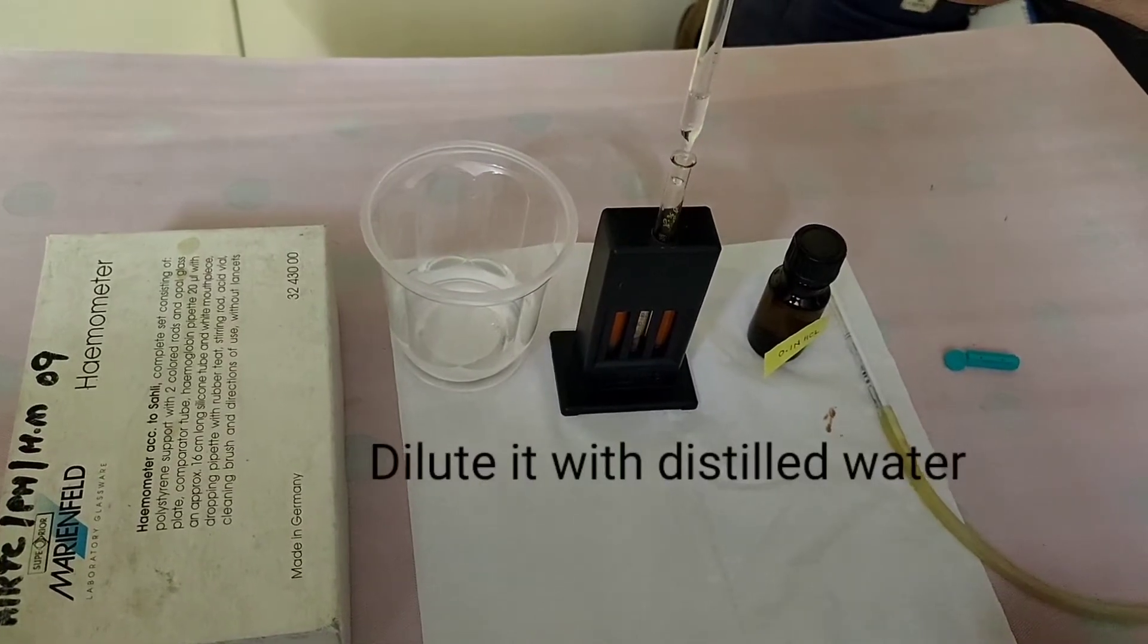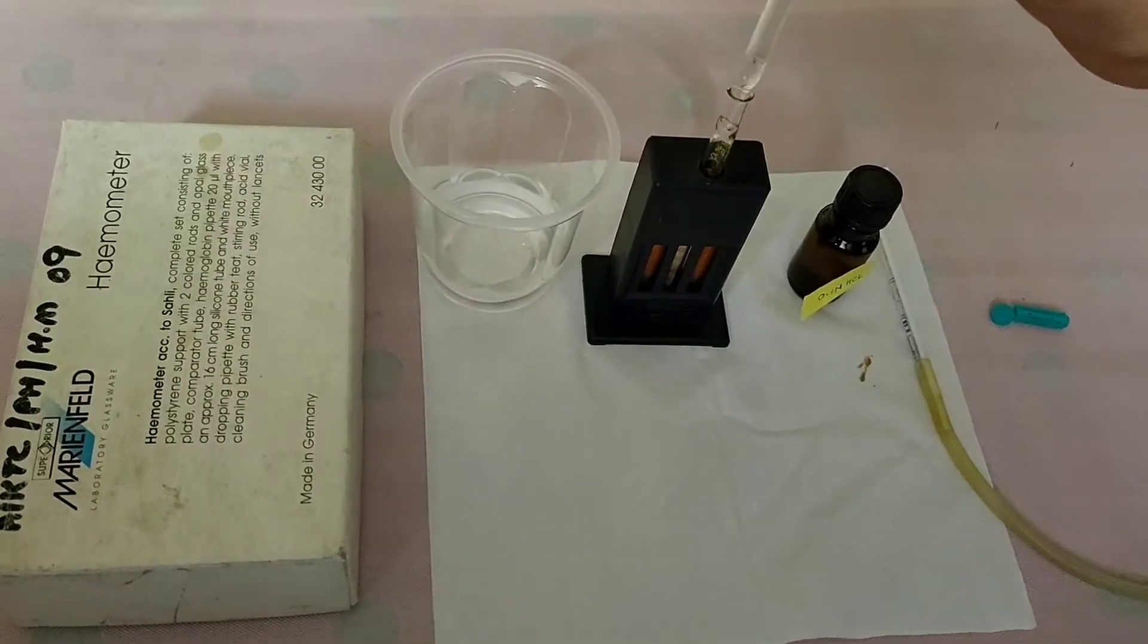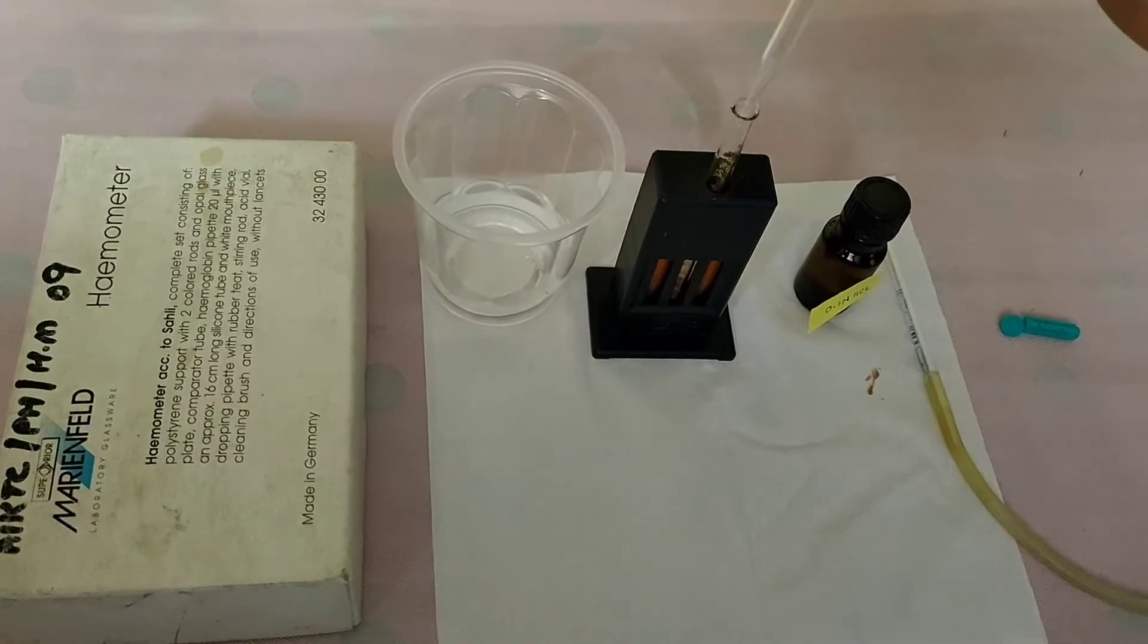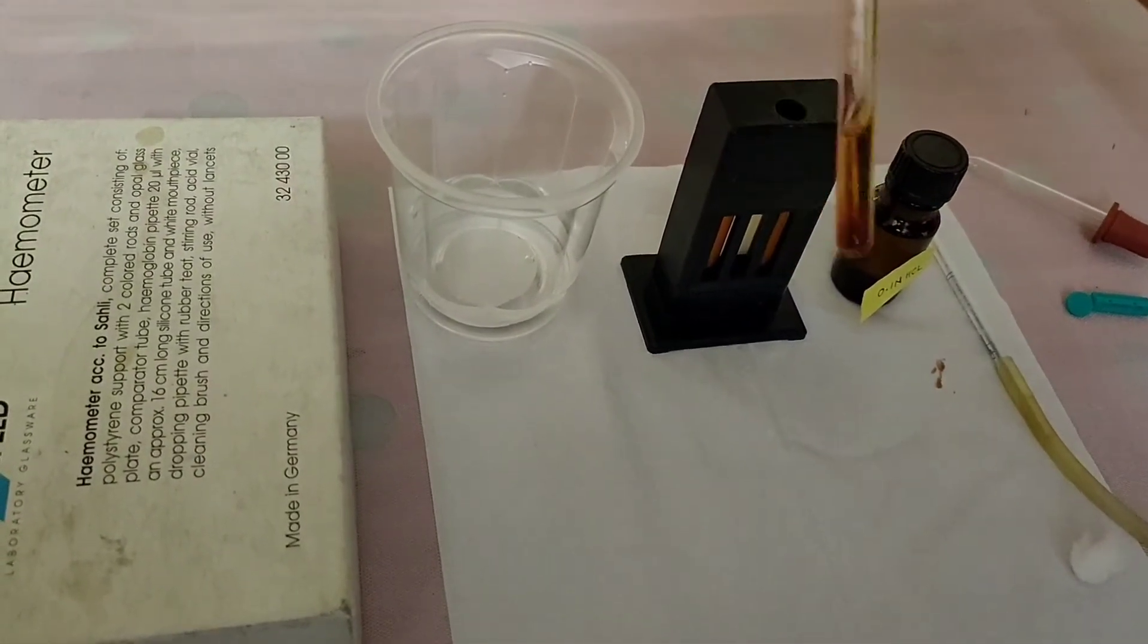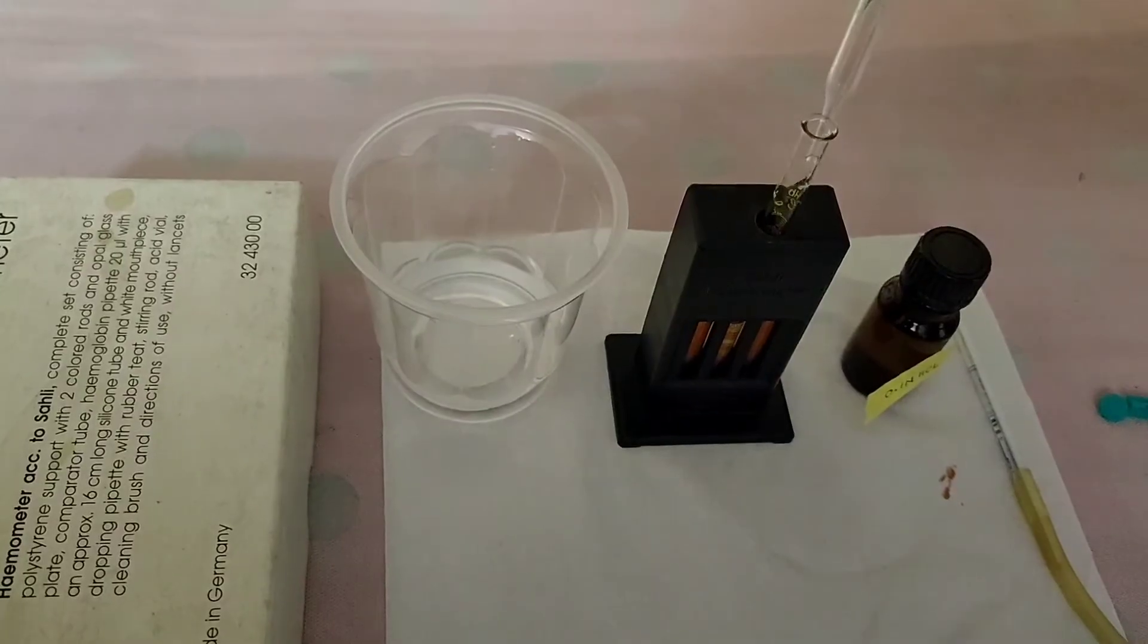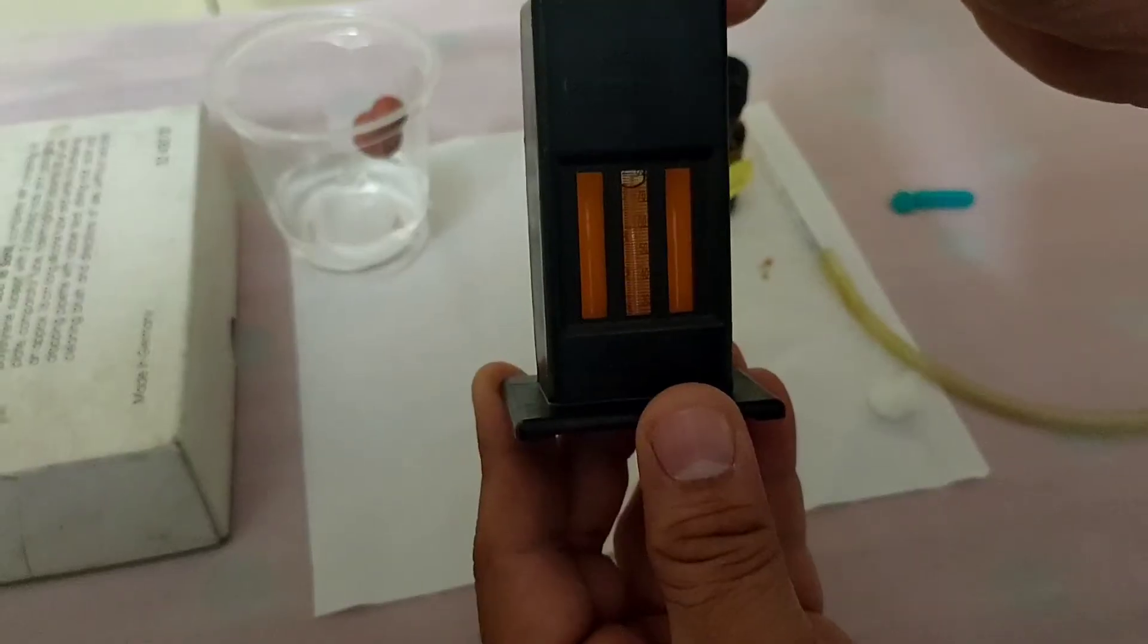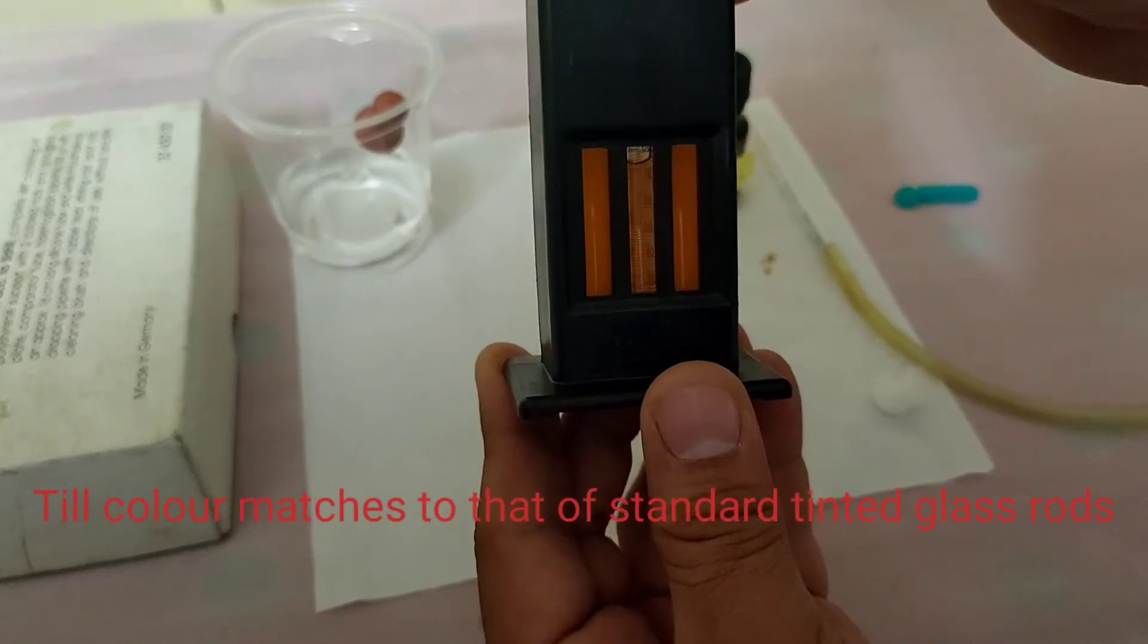Then, dilute it with distilled water. Dilute the solution with the distilled water till the color matches to the standard tint glass rod.